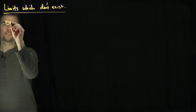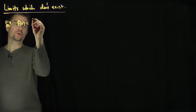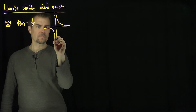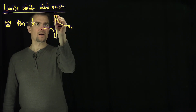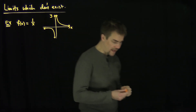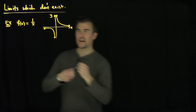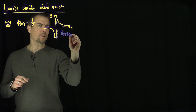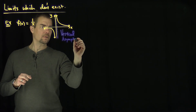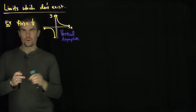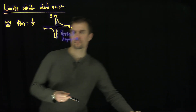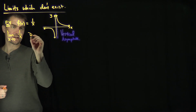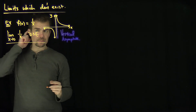Here's our first example. If I look at f of x, which is just 1 over x, we know what the graph looks like. The graph looks like this. There's the x-axis, there's the y-axis. And of course, this function has a vertical asymptote at x equals 0. That is a vertical asymptote. So, in other words, the limit as x approaches 0 of 1 over x does not exist. That's one way that a limit cannot exist — it has an asymptote, or it's going to infinity.